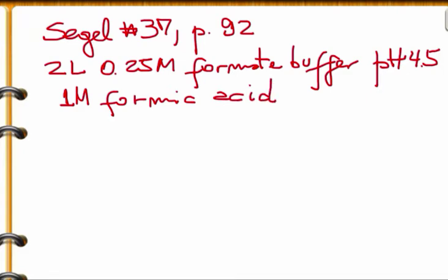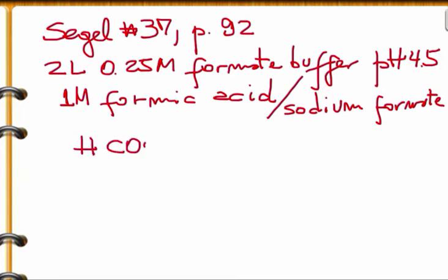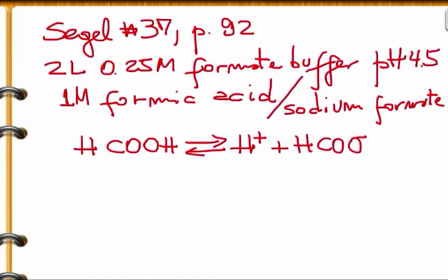This is going to be a formic acid and solid formate buffer — an acid and its conjugate base, with the conjugate base being formate. The pKa was given as 3.75. The dissociation of formic acid: HCOOH is in equilibrium with H⁺ and HCOO⁻. Since we are dealing with a buffer, we write the Henderson-Hasselbalch equation, with the conjugate base as the numerator and the acid as the denominator.